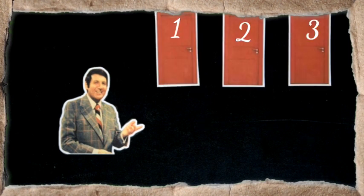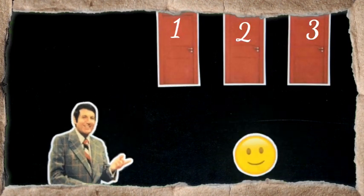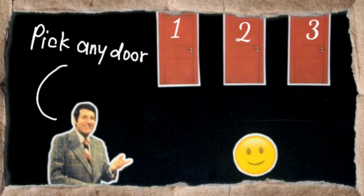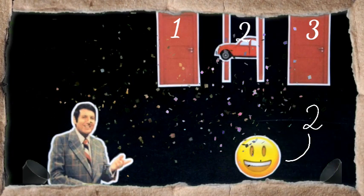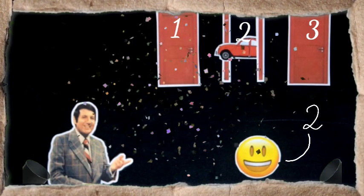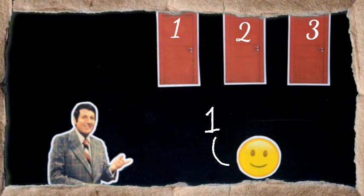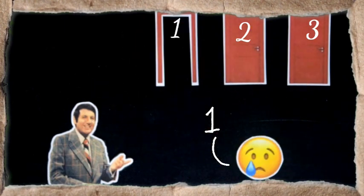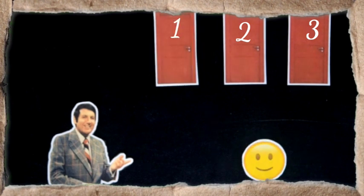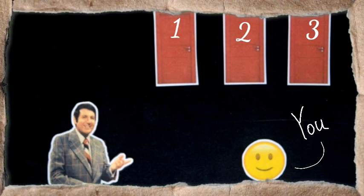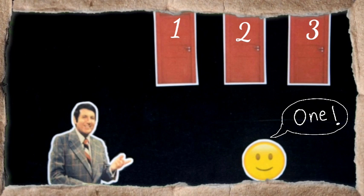There used to be three doors, and behind one of the doors there would be a car. Behind the other two doors there would be nothing. The host Monty would ask one of the spectators to pick any door. If he picks the right door, then he wins a brand new car. But if he picks the wrong door, then he wins nothing.